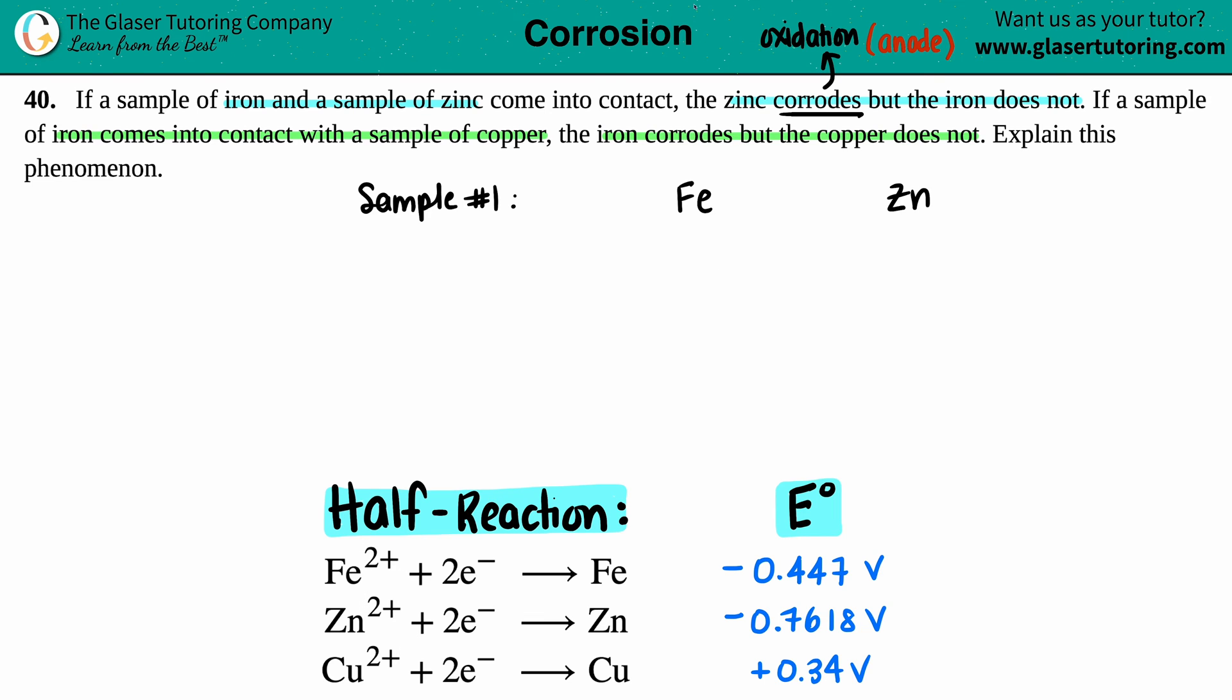So now let's just take their E° values. The Fe has an E° value, a cell potential, of -0.447, and the Zn has a cell potential of -0.7618. Once again, I found these in the back of the textbook in an appendix value.